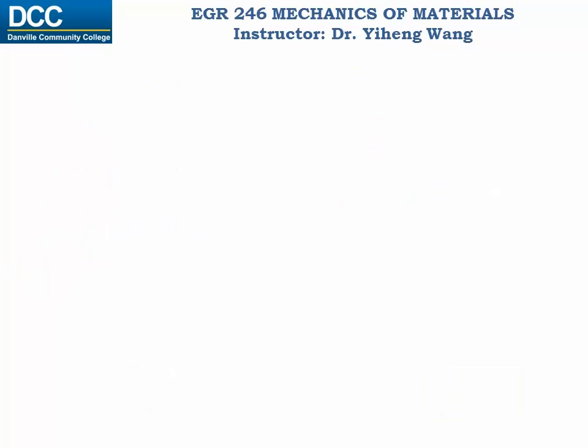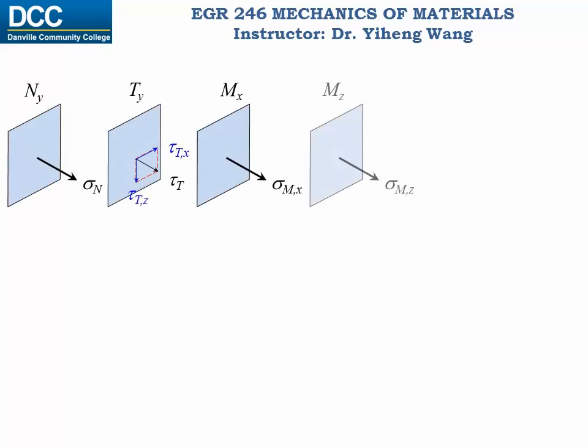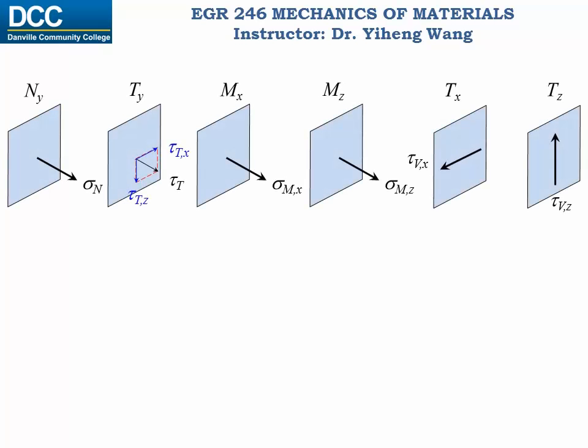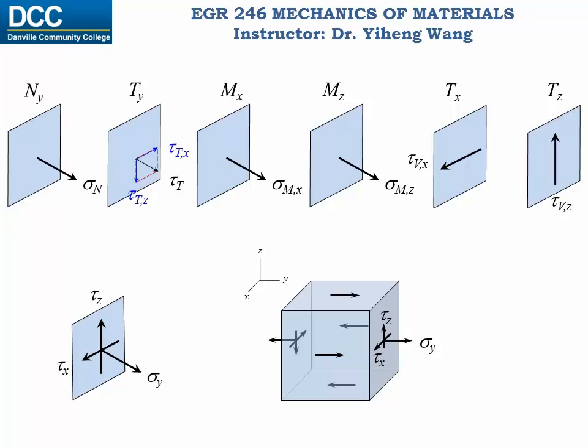After you have evaluated the stress caused by the six different internal reactions individually, you can combine the stress components along the same direction and represent the state of stress on a volume element. Don't forget, the normal stress must be in equilibrium, and there is also the complementary property of shear stress.